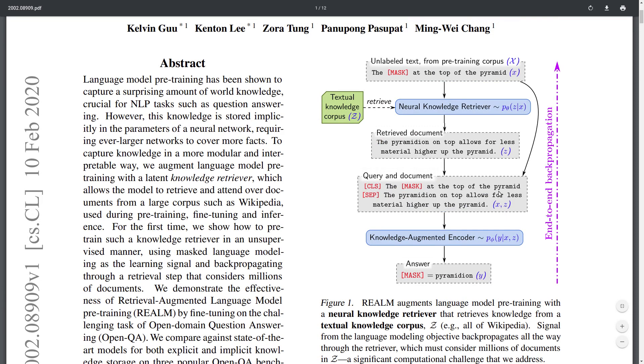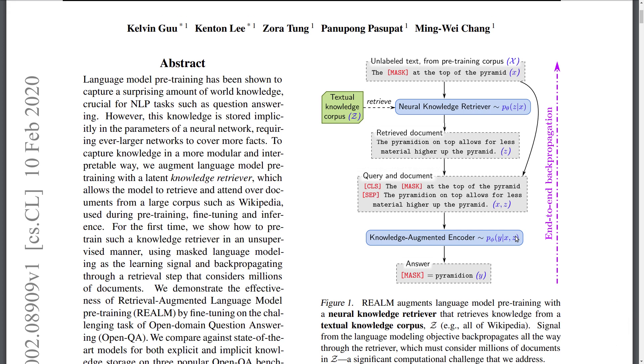Basically, the way this step works, which is p of y given x and z, is you're going to be pre-training given—you're going to be given the original x requested by the user, for example. You're going to have your separator token, and then you're going to input the external knowledge text z here. And you're going to be then trying to predict the correct mask token 'pyramidion.' So you're integrating in this way your external knowledge into the mask language model. And this is also separated using the separator token to make sure that the model is able to distinguish between the external knowledge and the current context.